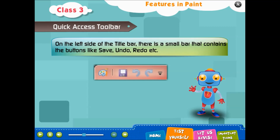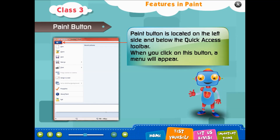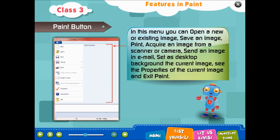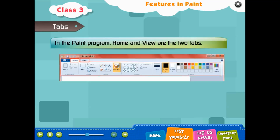The Quick Access Toolbar is on the left side of the title bar and contains buttons like Save, Undo, and Redo. The Paint button is located on the left side below the Quick Access Toolbar. When you click on this button, a menu will appear. In this menu you can open a new or existing image, save an image, print, acquire an image from a scanner or camera, send an image in email, set as desktop background, see properties of the current image, and exit Paint.